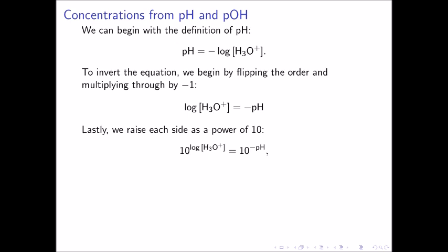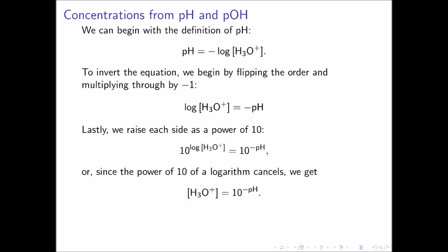Last, we raise each side as a power of 10. This gives 10 to the power of the logarithm of the hydronium ion concentration equal to 10 to the power of the negative pH. Since the power of 10 of a logarithm cancels out, we get the concentration of hydronium ion is equal to 10 to the negative pH power. We also have a corresponding equation for pOH in which the hydroxide ion concentration is equal to 10 to the negative pOH power.